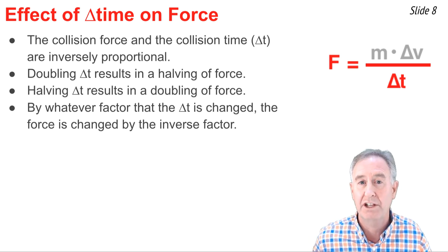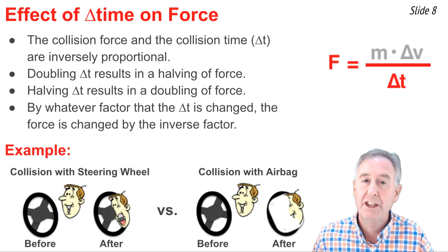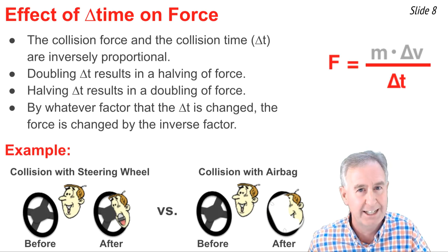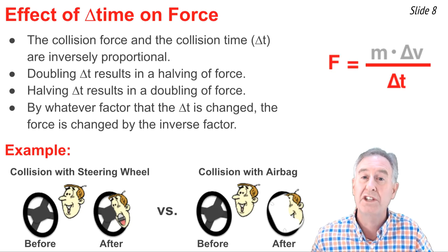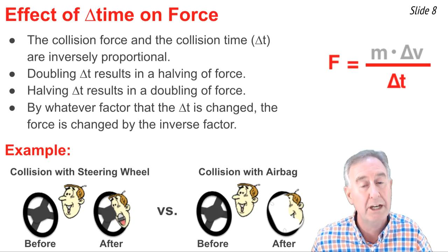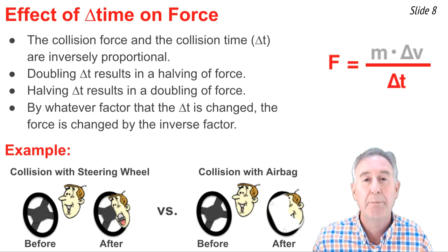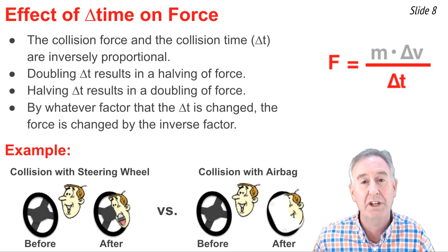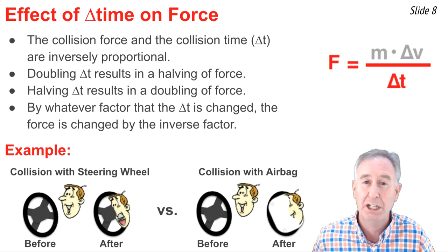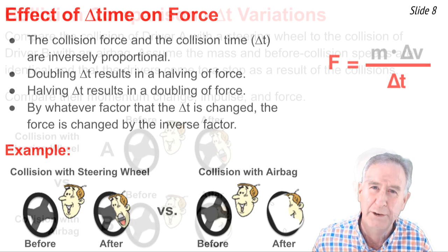The classic illustration of this is the use of an airbag in a car. The alternative would be hitting a steering wheel, which stops your momentum rather abruptly with a very small delta T. Hitting the airbag causes your momentum to stop more gradually, resulting in a bigger delta T and a smaller force. And that's physics for better living.